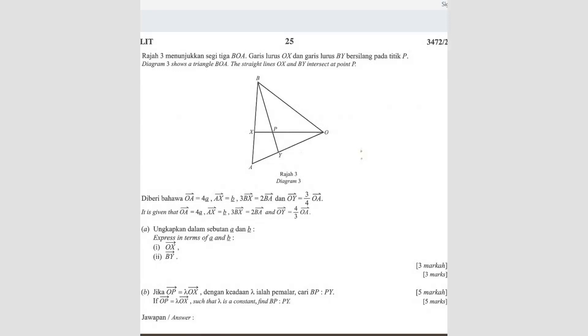Question number 6. Diagram 3 shows triangle BOA, straight line OX and BY are intersects at point P. So here they intersect. OX and BY intersect here.